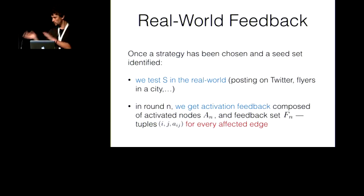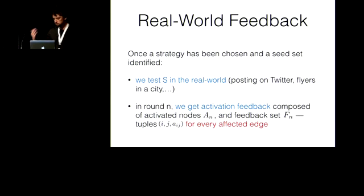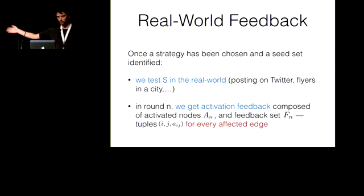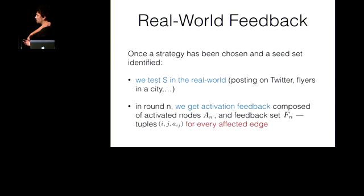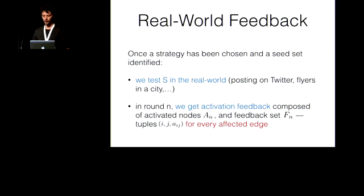Once we choose the k seeds and test them in the real world — for instance, asking people to post on Twitter or distributing flyers — we get activation feedback. This feedback consists of the set of activated nodes added to the total activation set, and a feedback set of edges in the activation tree indicating whether a successful activation occurred through each edge.